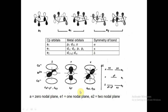The sigma bonding forms from the dz² orbital, pi bonding from dxz and dyz, and delta bonding from dx²-y² and dxy orbitals. So sigma involves dz², pi involves dxz and dyz, and delta involves dx²-y² and dxy.